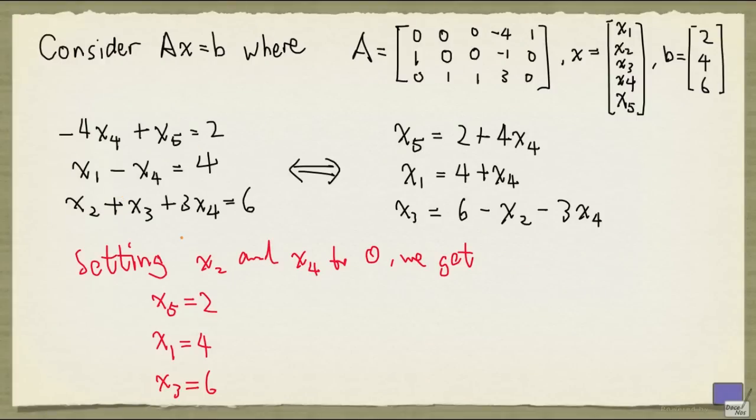Now, if you happen to have such a system where each equation has at least one variable that appears in no other equation, and its coefficient is 1, then those variables are called basic variables. And the remaining variables are called non-basic variables.